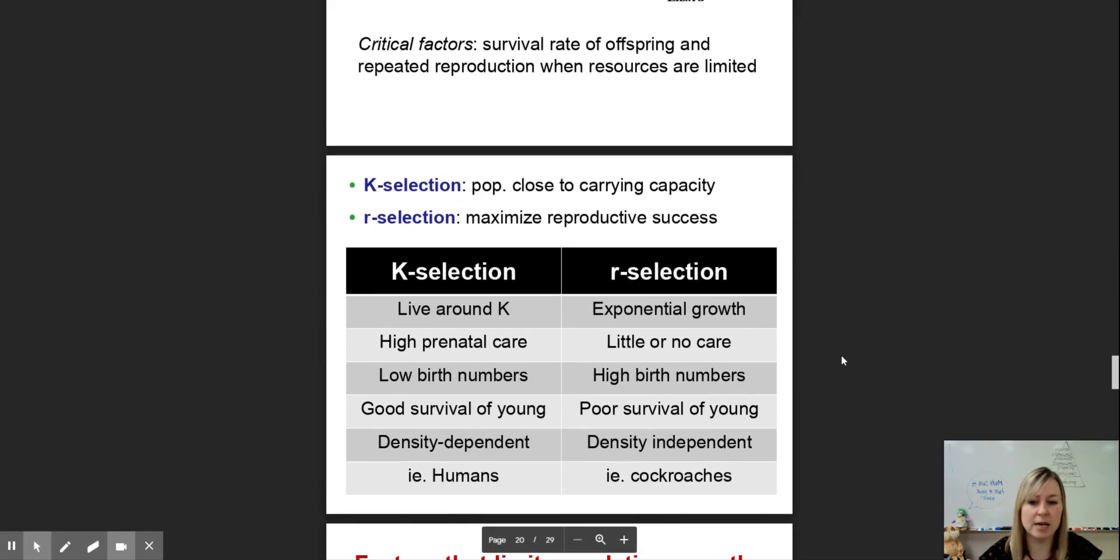So this is where we get the idea of r selection and K selection. K selection is when a population is at its limits, when the parents stick around to care for their offspring, making sure all their needs are met. Birth numbers are low. This is iteroparity. All organisms with that life structure are usually under K selected population growth. R selection is all about growth rate, really fast, maximize reproductive success. You have to reproduce a lot and quickly because the situation and environment is not conducive to survival. This is more like semelparity or Big Bang reproduction.